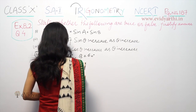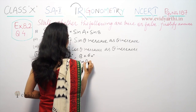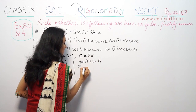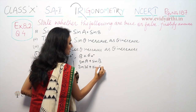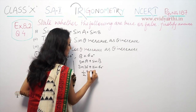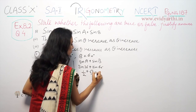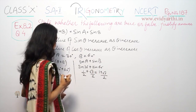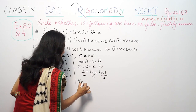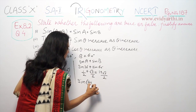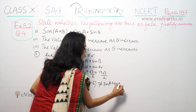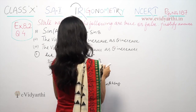Now sin A plus sin B: sin A means sin 30° and sin B means sin 60°. Sin 30° is 1/2 and sin 60° is √3/2, so together that gives (1 + √3)/2. Since 1 is not equal to (1 + √3)/2, sin(A + B) is not equal to sin A + sin B. So this statement is false.